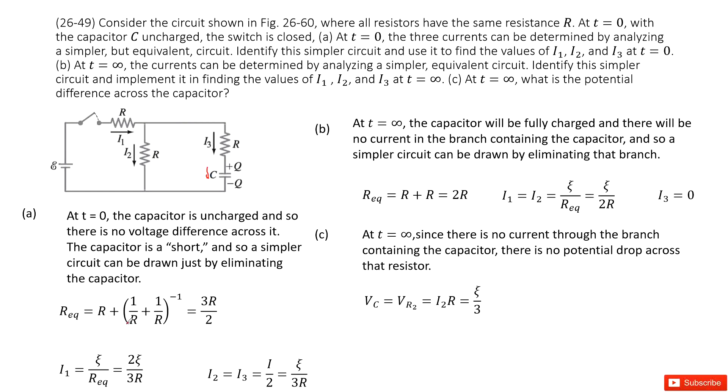It looks like this one, R plus this part, this R, and this R is parallel connection. So the equivalent resistance is 3 times R divided by 2. Now you can see I1 can be calculated as the EMF divided by equivalent resistance. So this is 2 epsilon divided by 3R.